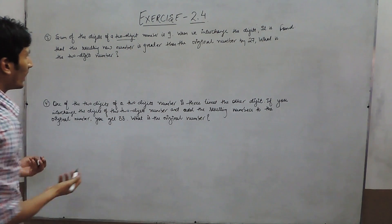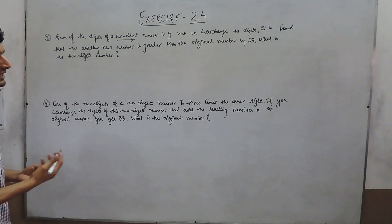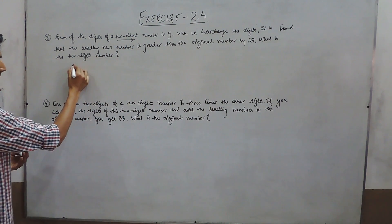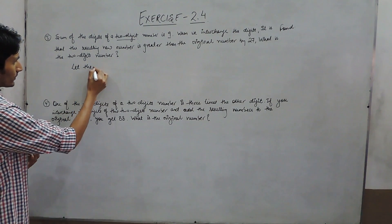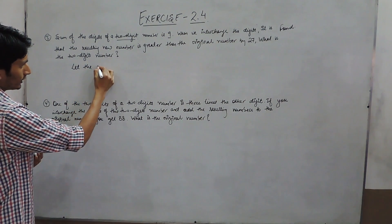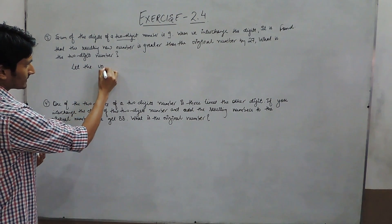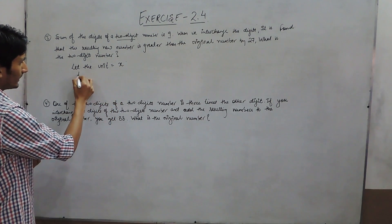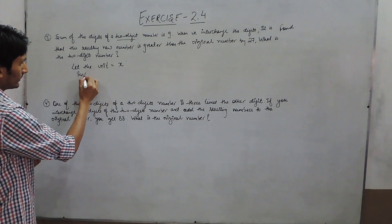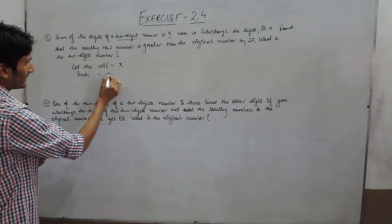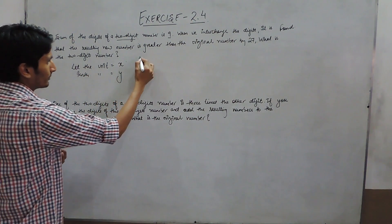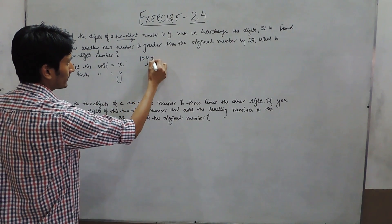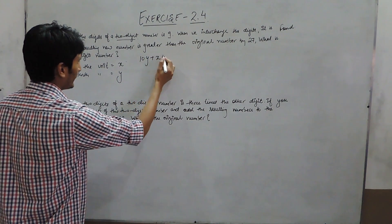We already know how a 2-digit number is formed. Let the unit place digit be x and the tens place digit be y. So the number should be 10y plus x.